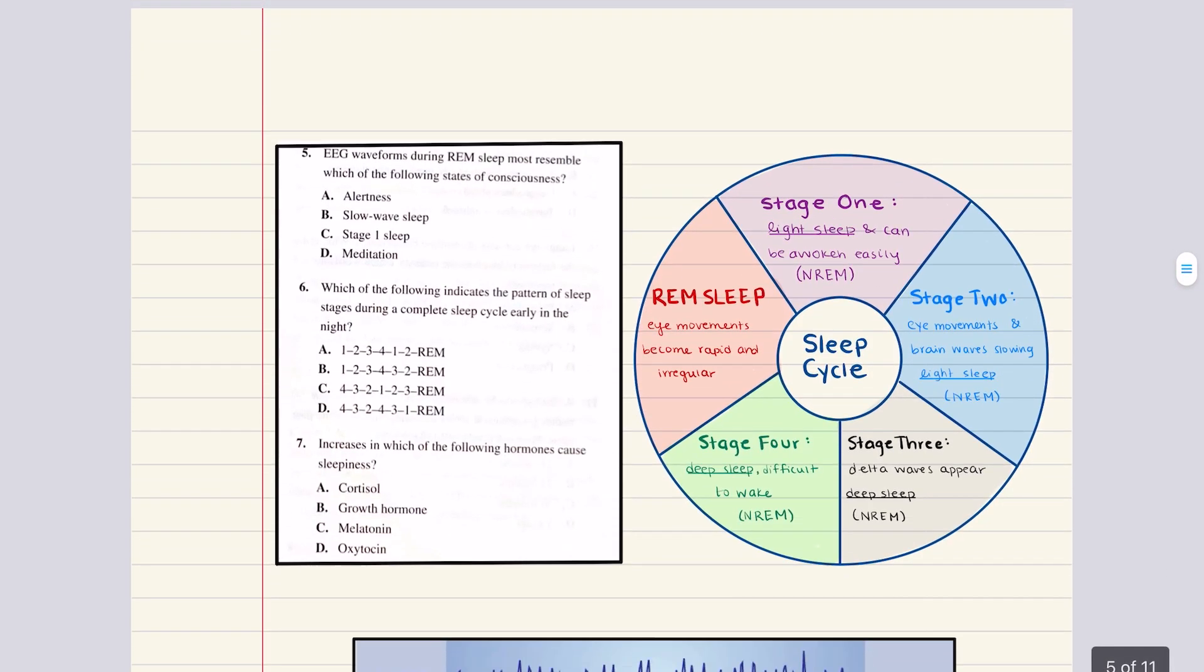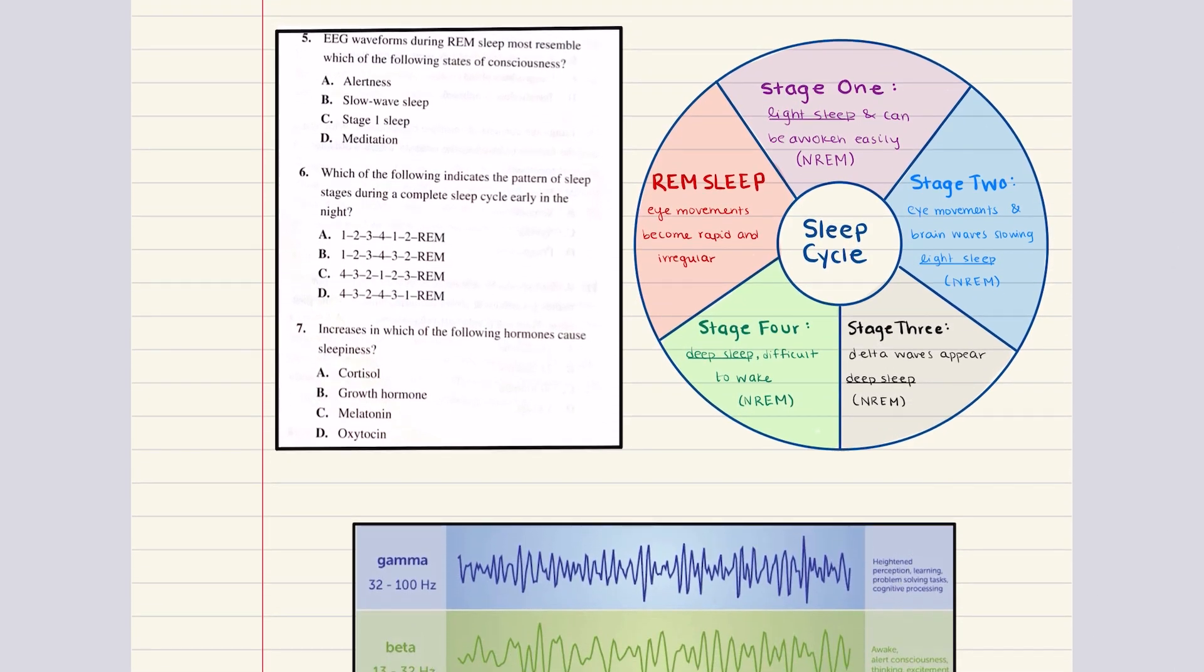Problem five reads EEG waveforms during REM sleep most resemble which of the following states of consciousness: alertness, slow wave sleep, stage one sleep, or meditation? EEG during REM is composed mainly of beta waves which are also present during alertness. So right off the bat the correct answer here is A. Slow wave sleep consists mainly of delta waves which are not typically present during REM sleep. Stage one sleep consists mainly of theta waves and meditation consists mainly of slow alpha and theta waves. So again the correct answer for five is A.